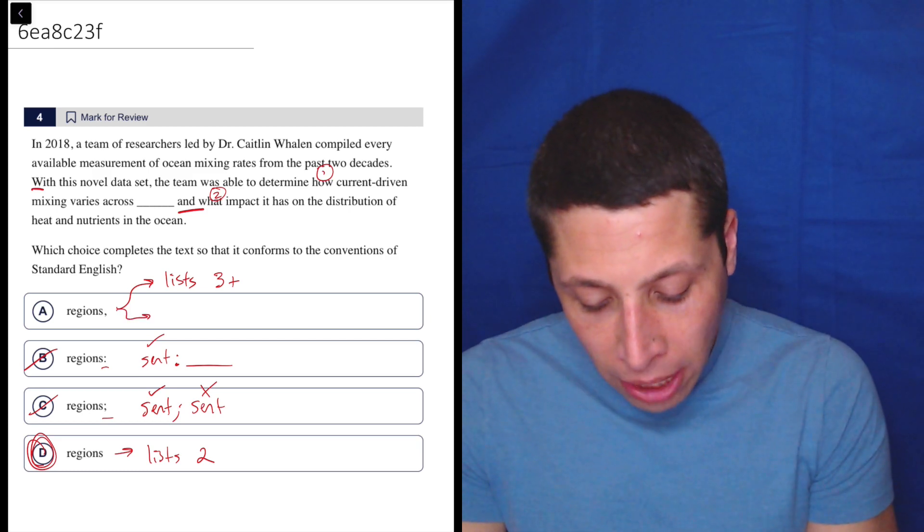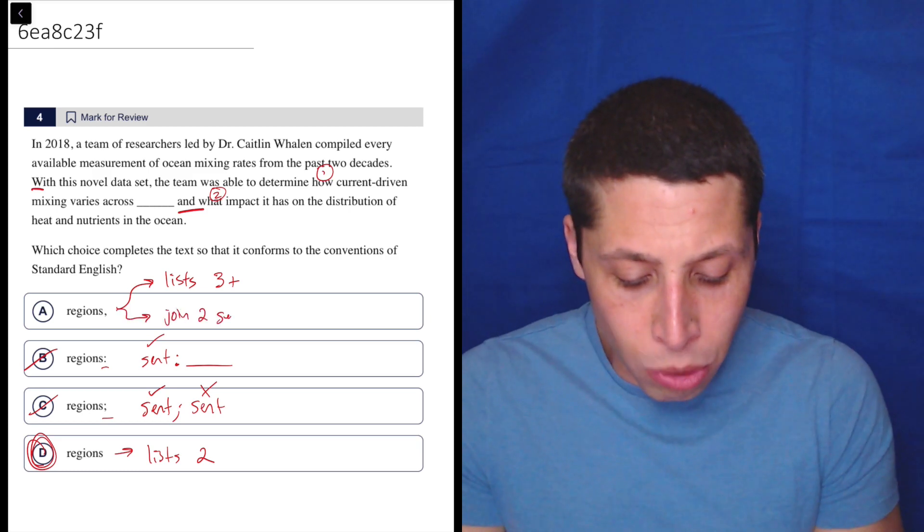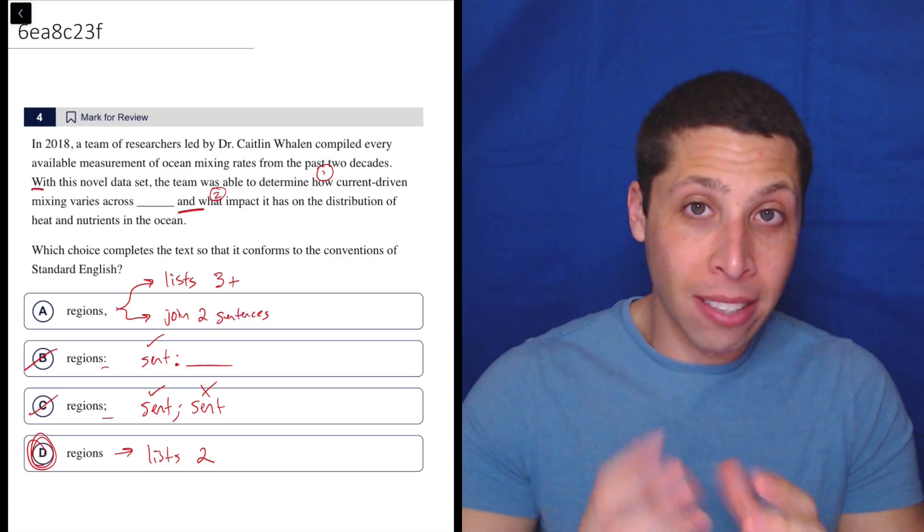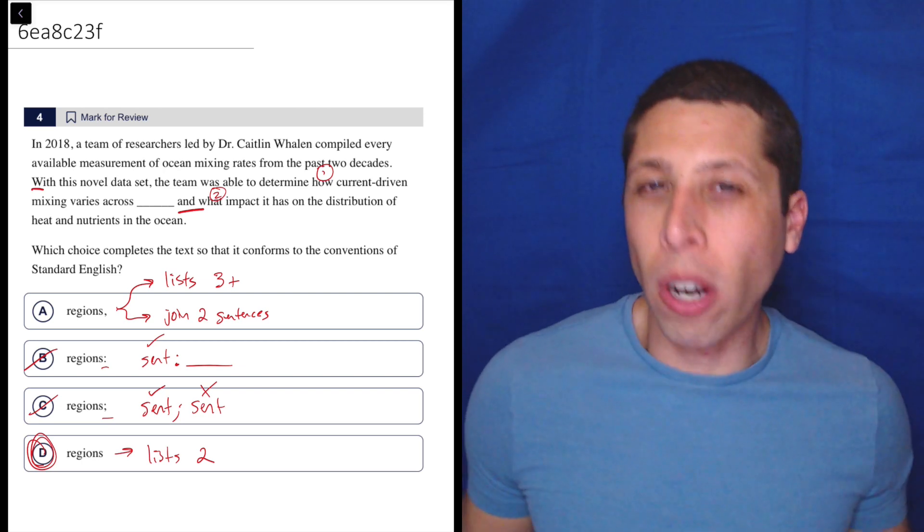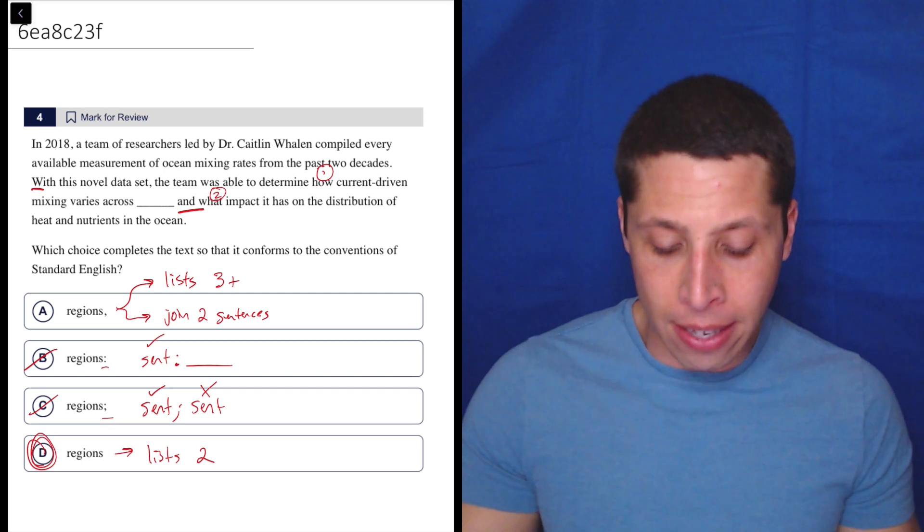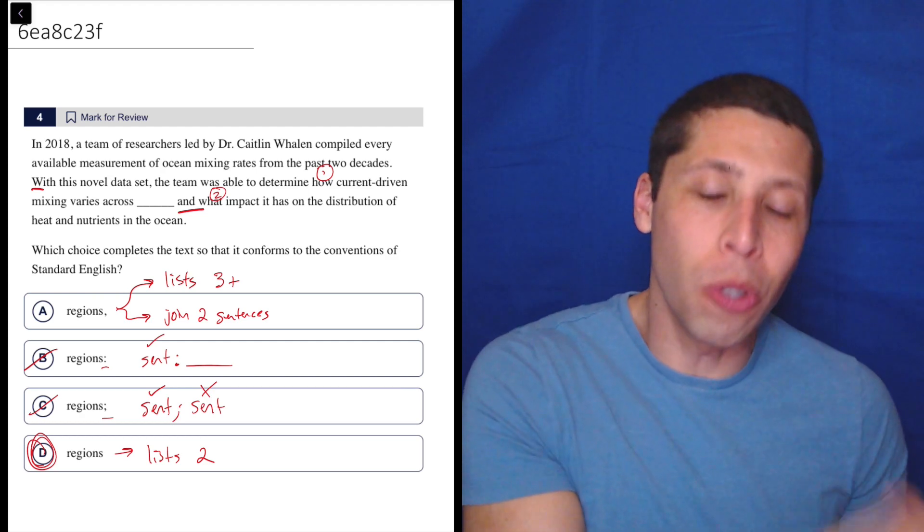The other reason we might use a comma with and is to join two sentences together. So again, this kind of gets the same things that we talked about with choice C, where what is the structure of the sentence? Where do sentences begin and end? Basically using the comma with the and in that way would be equivalent to using a semicolon.